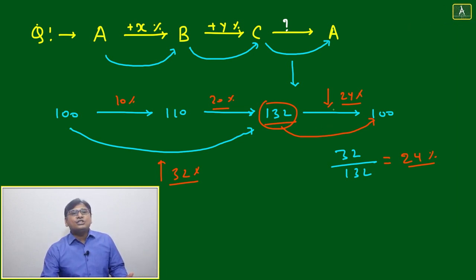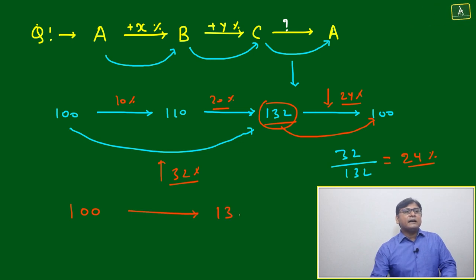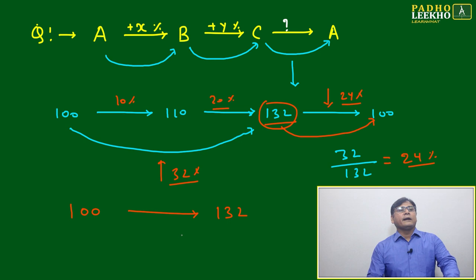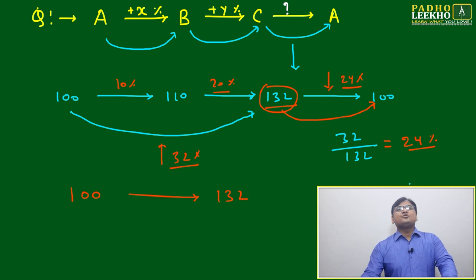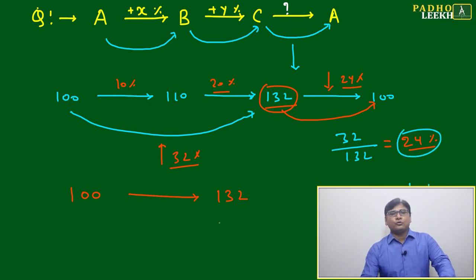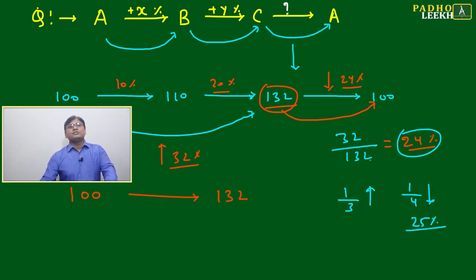Then here we have to decrease by almost 24 percent. Here we can calculate like 100 to 132 and 132 to 100. If we are just shifting like this, then we can apply the concept of 1 by x. 132 we can just replace by 33, approximately 133, means 1 by 3 it is increasing, then it should decrease by 1 by 4. That we are getting around 24 percent, around 25 percent.